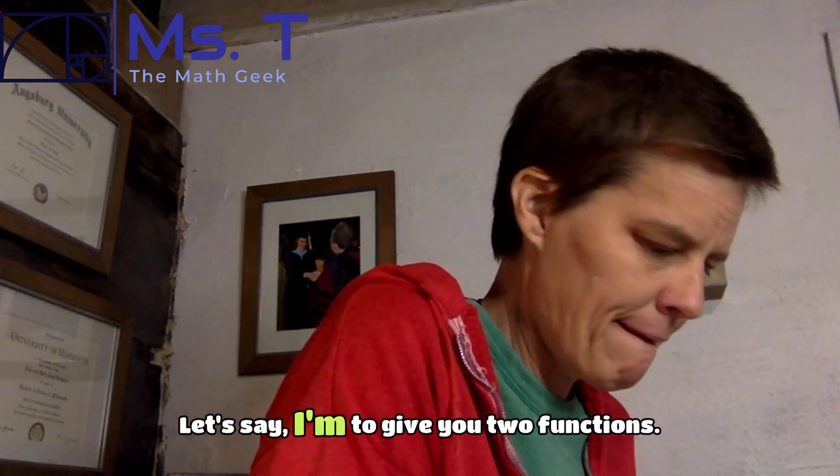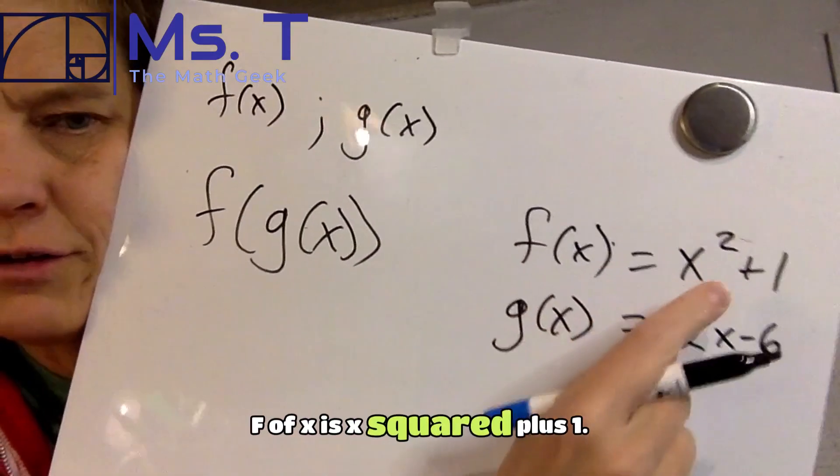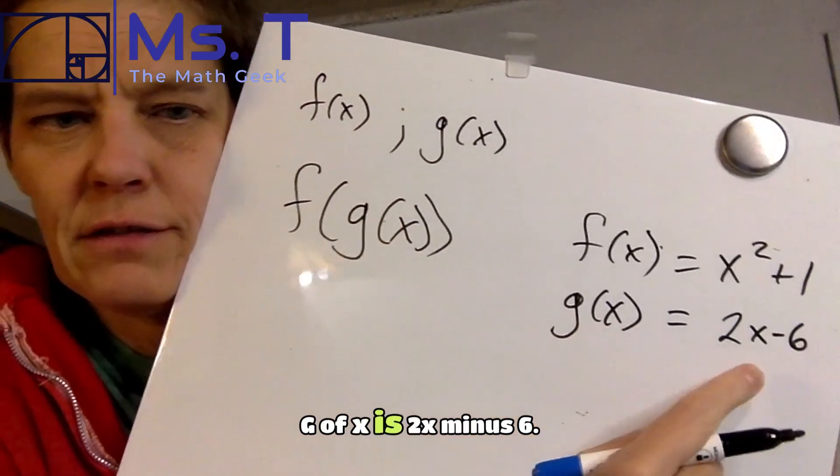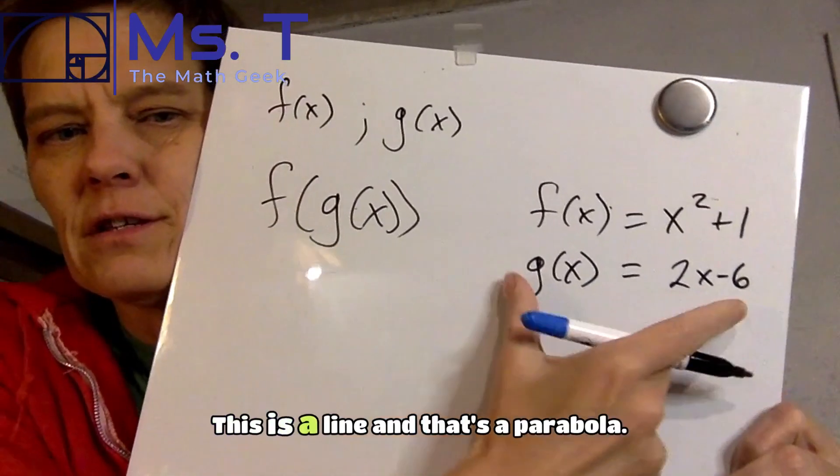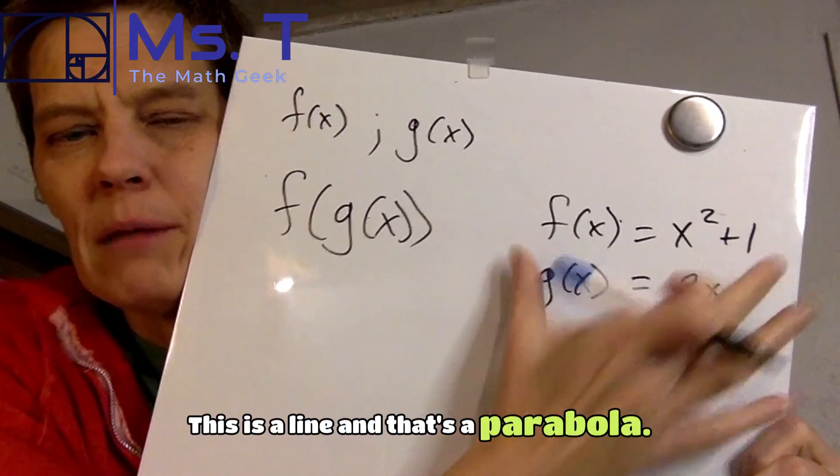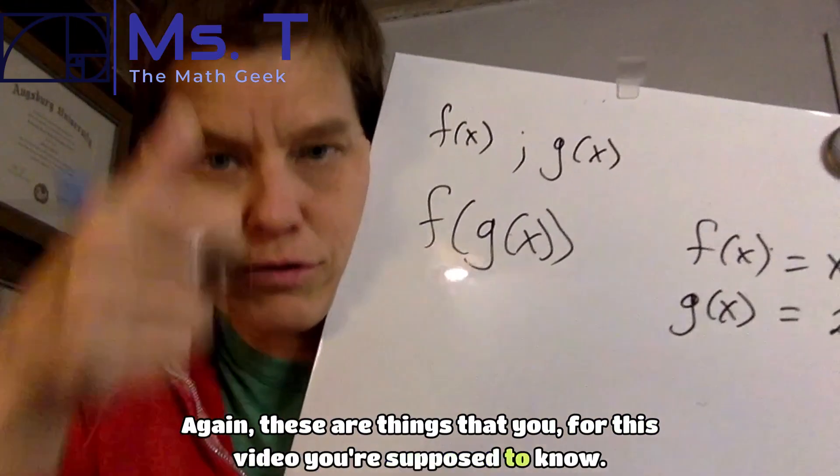Let's say I'm going to give you two functions. f of x is x squared plus 1. g of x is 2x minus 6. This is a line, and that's a parabola. Again, these are things that you, for this video, you're supposed to know.